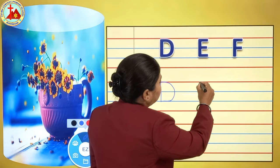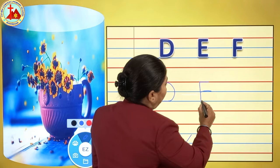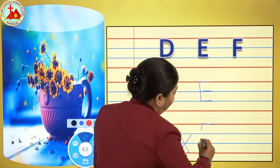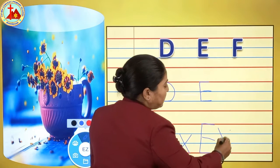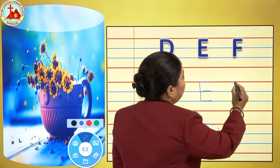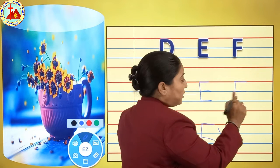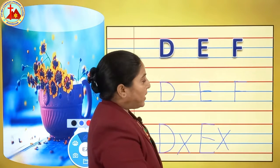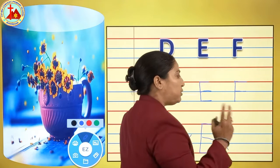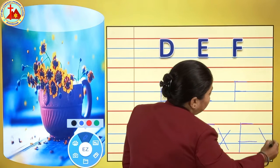Now letter E. Standing line, sleeping line, sleeping line, and one more sleeping line. That is letter E. You cannot write E like this — this is the wrong one. Now letter F: standing line, sleeping line, sleeping line. Shall I draw one more sleeping line? No — if you draw one more sleeping line it will become letter E. We are writing letter F, so we draw only two sleeping lines. You cannot write F like this — this is the wrong one.